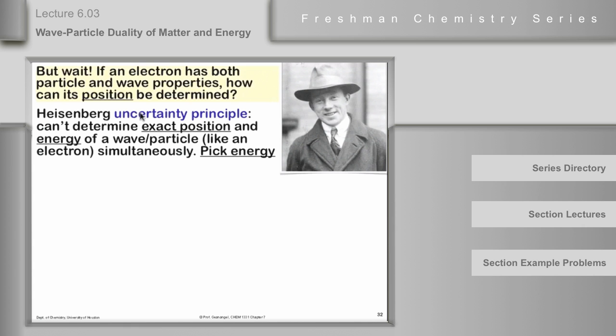He said, with this approach, you can't do that. And in fact, his uncertainty principle, which he is known far and wide about, said that you can't determine the exact position and the exact energy of a wave particle like an electron simultaneously. So you have to give up one of them. And since it was very important to talk about fixed energies of electrons and atoms, what they did was they picked energy and they gave up knowing where the electron was.